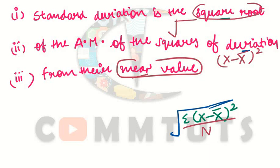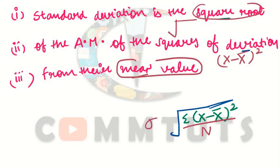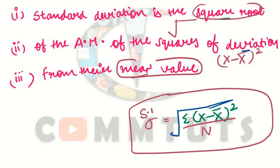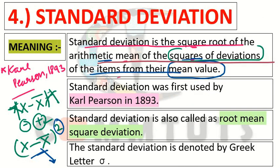So the formula for standard deviation is clear. Standard deviation is denoted by sigma. The formula is: sigma equals square root of summation (x minus x-bar) squared divided by n. In simplified form, it is written as: sigma equals square root of summation x-squared divided by n. I hope the standard deviation formula is clear.